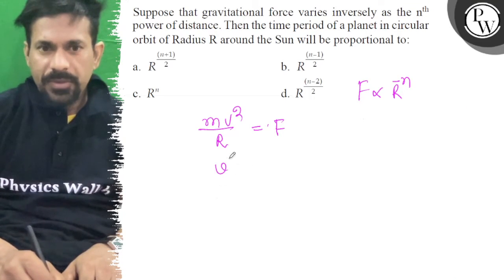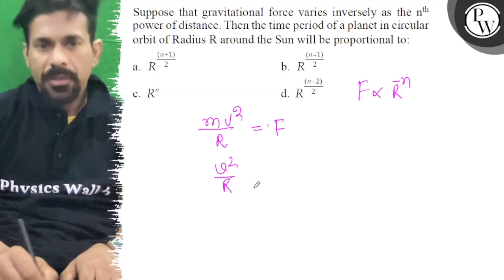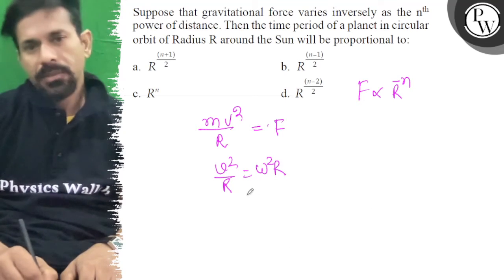So we can write that v squared upon r, and we can write omega squared times r.